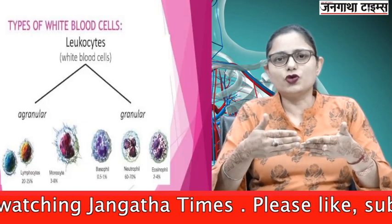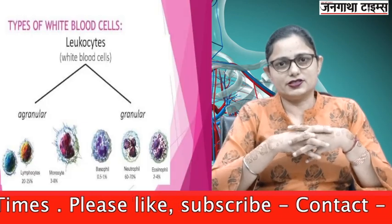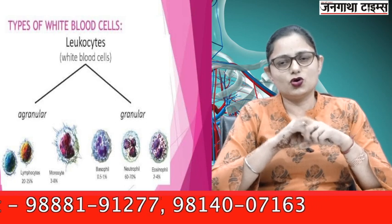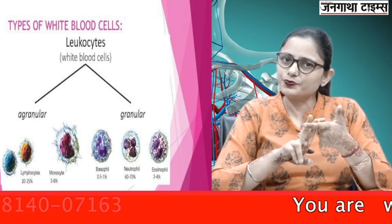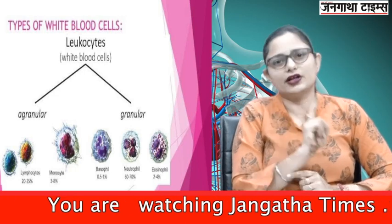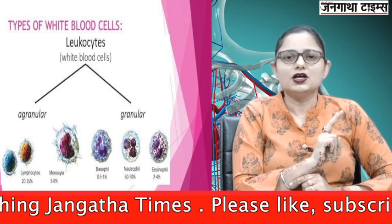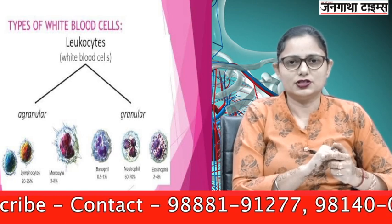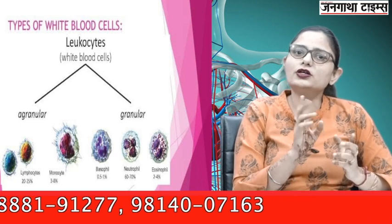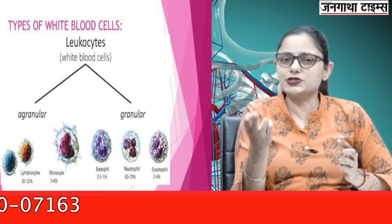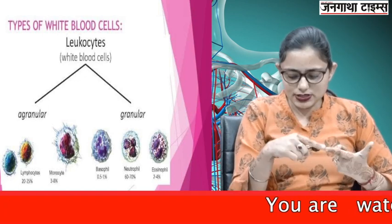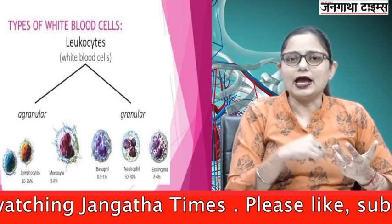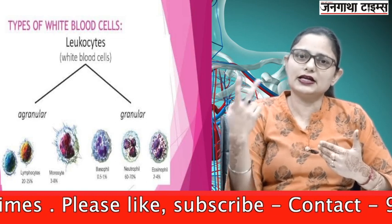Now, the formation of WBCs or white blood cells. White blood cells, or leukocytes, are of two types: granulocytes and agranulocytes, classified on the basis of the presence of granules. Granulocytes are of three types: neutrophils, eosinophils, and basophils. Agranulocytes are of two types: monocytes and lymphocytes.